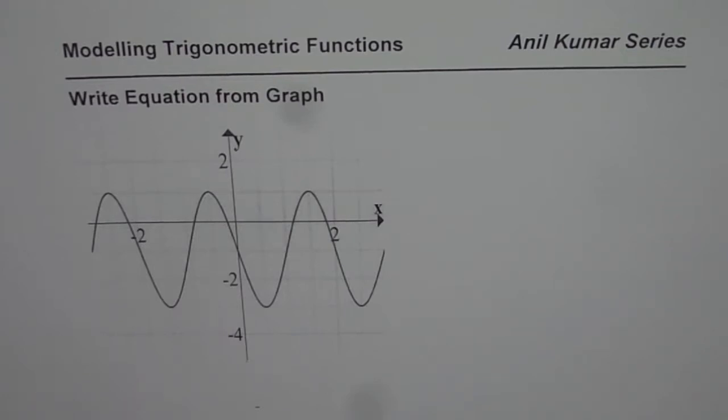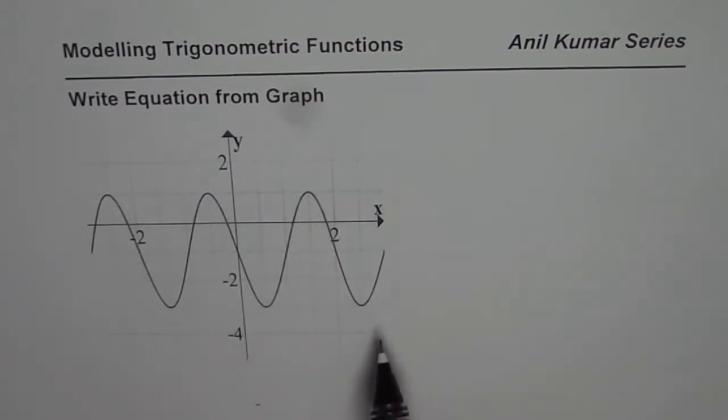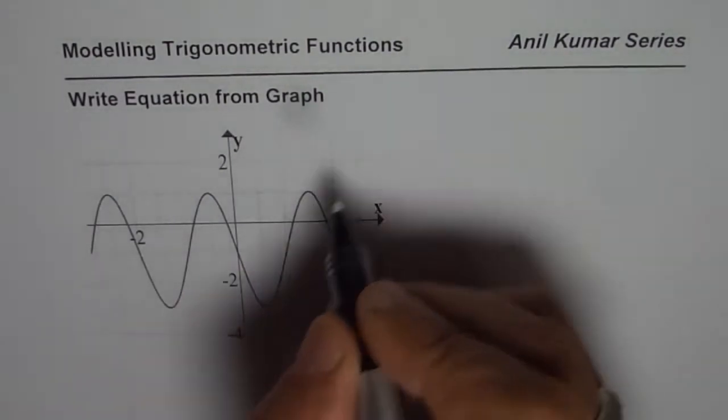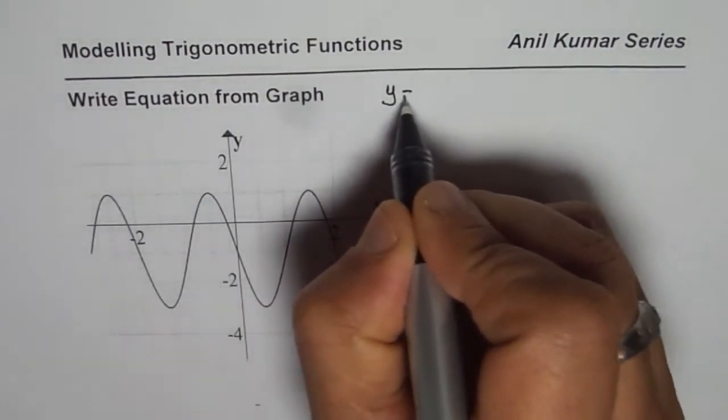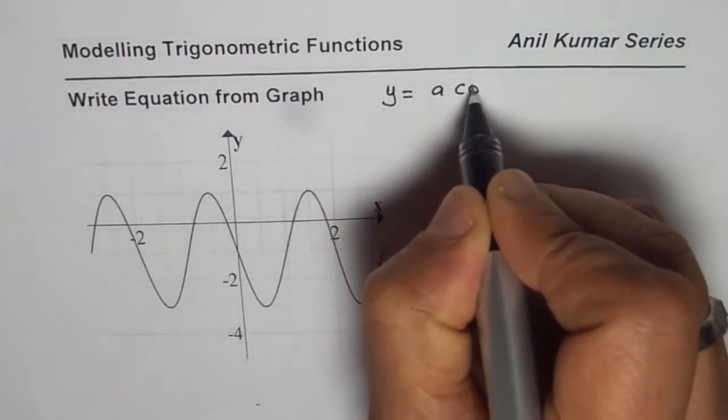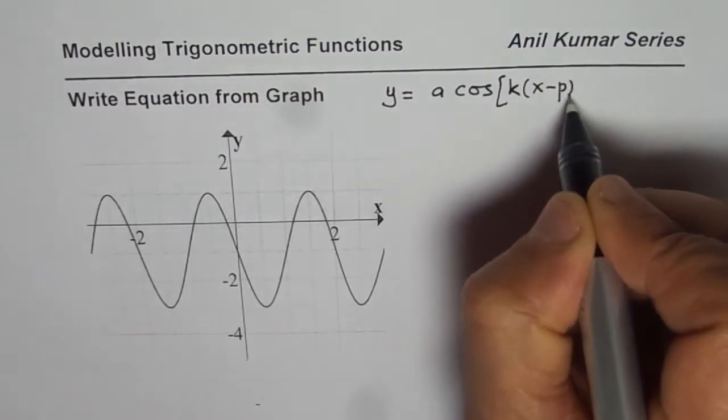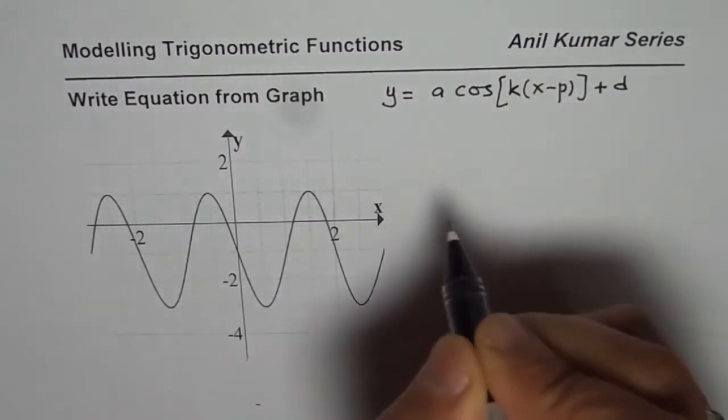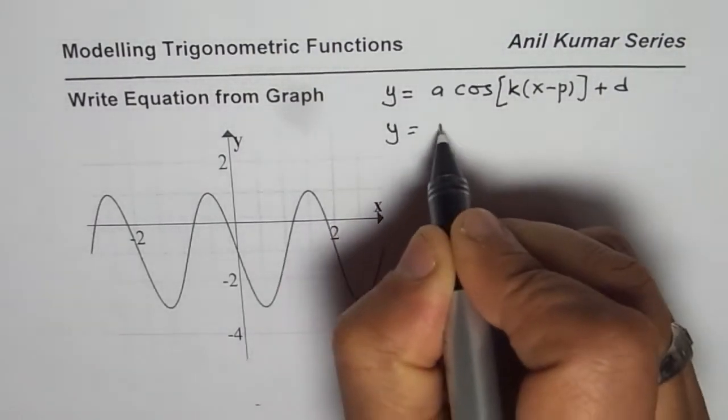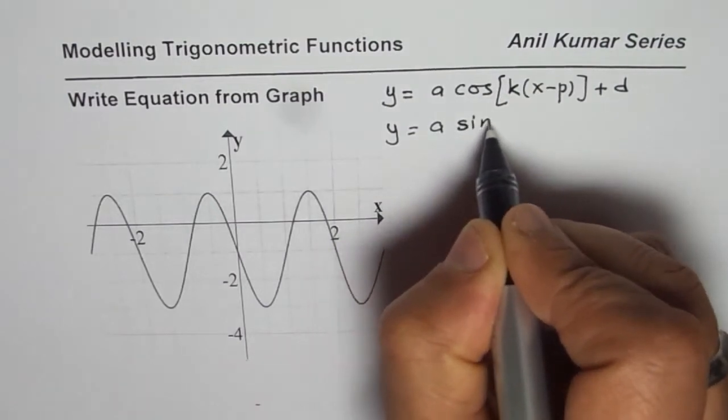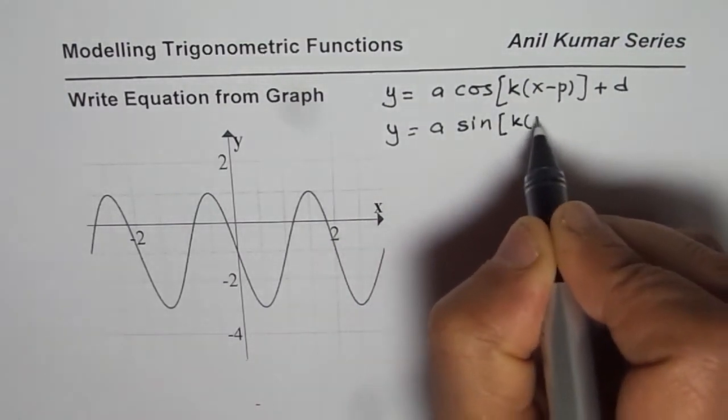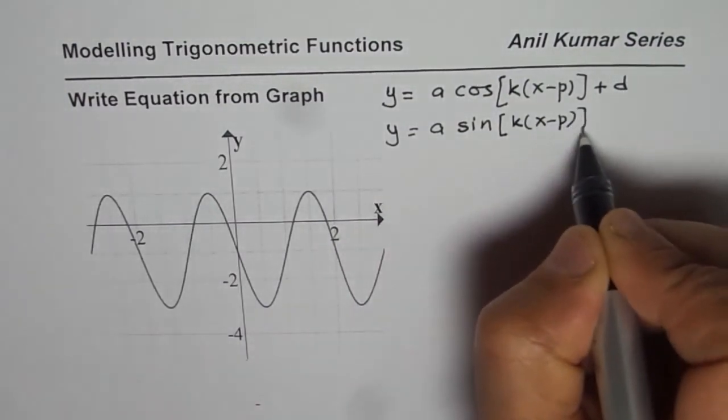We are dealing with sinusoidal functions and we could write this equation in the form of a sine function or in the form of a cosine function. So we can write the equation in general as y equals a cos of k(x minus p) plus d, or we could also write this as a sine of k(x minus p) plus d.